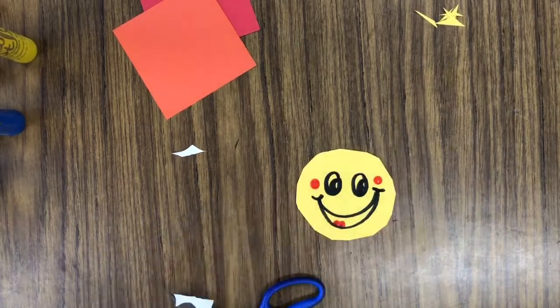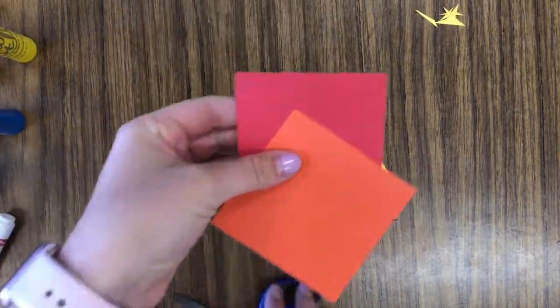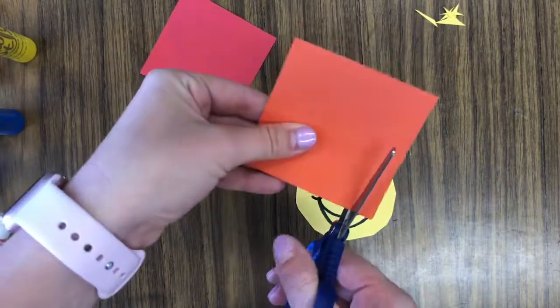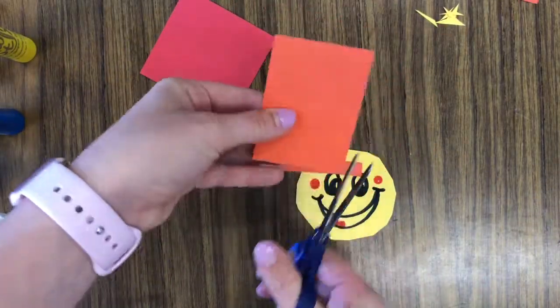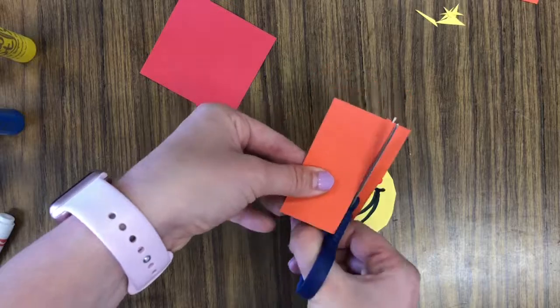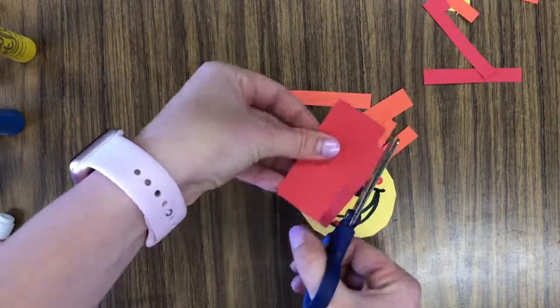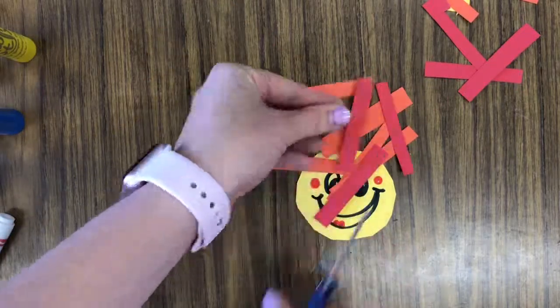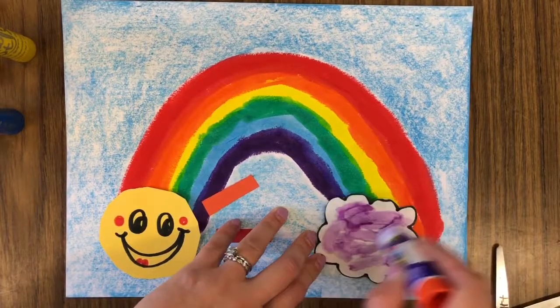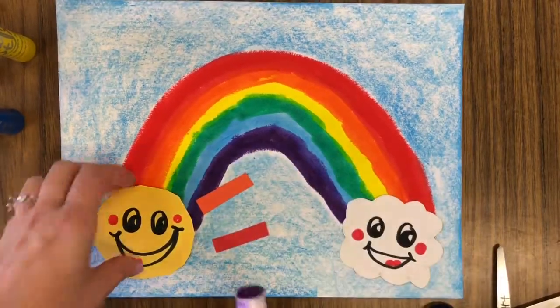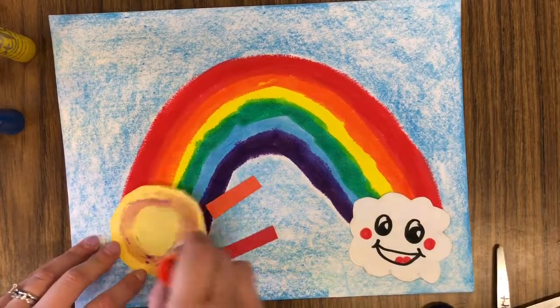Next cut strips of red and orange paper. You can glue these strips of paper around the circle sun that you just made. If some of them hang off the edge of your paper that's okay.